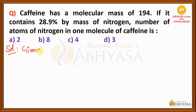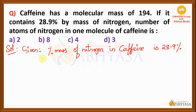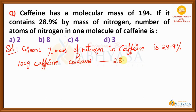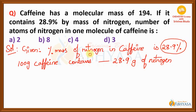Let us write the given data. The percentage mass of nitrogen in caffeine is 28.9%. What does this mean? If we take 100 grams of caffeine, this will contain 28.9 grams of nitrogen, because it is given as 28.9% of nitrogen in caffeine. So we have two values here — one value is that of the nitrogen and the other is that of the caffeine. In 100 grams of caffeine, there is 28.9 grams of nitrogen.